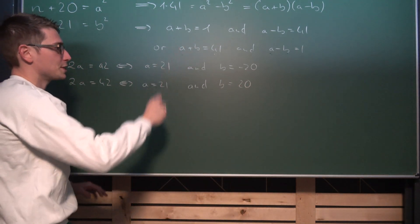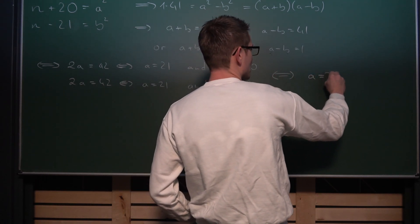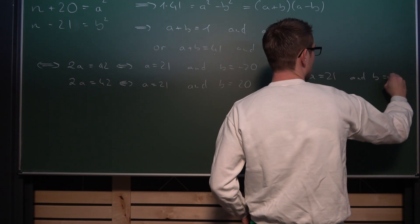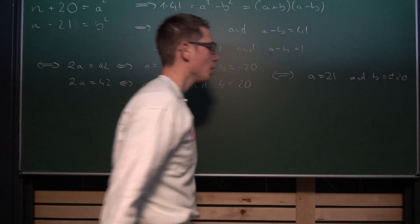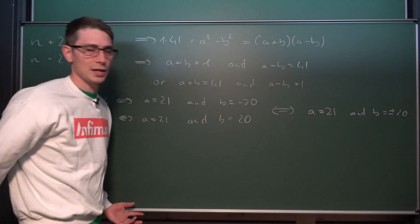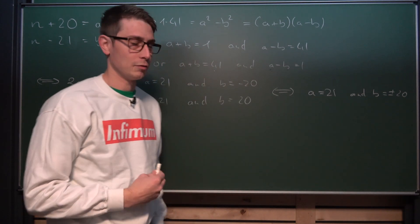So doesn't matter which case we get, we are going to get overall that A must be 21 in each and every case, and B must be equal to plus and minus 20. Which does make sense because we are having a quadratic here in some kind of way, and for quadratics the plus and minus is going to cancel out respectively in the process.